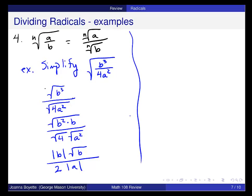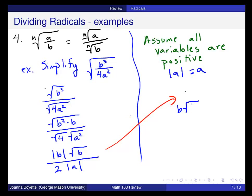Sometimes in certain problems you'll see this in the instructions. Assume all variables are positive. Now, if that's true, if a is a positive number, then this simplifies the notation. Absolute value of a is a, and this thing here would be written like b square root of b over 2a.